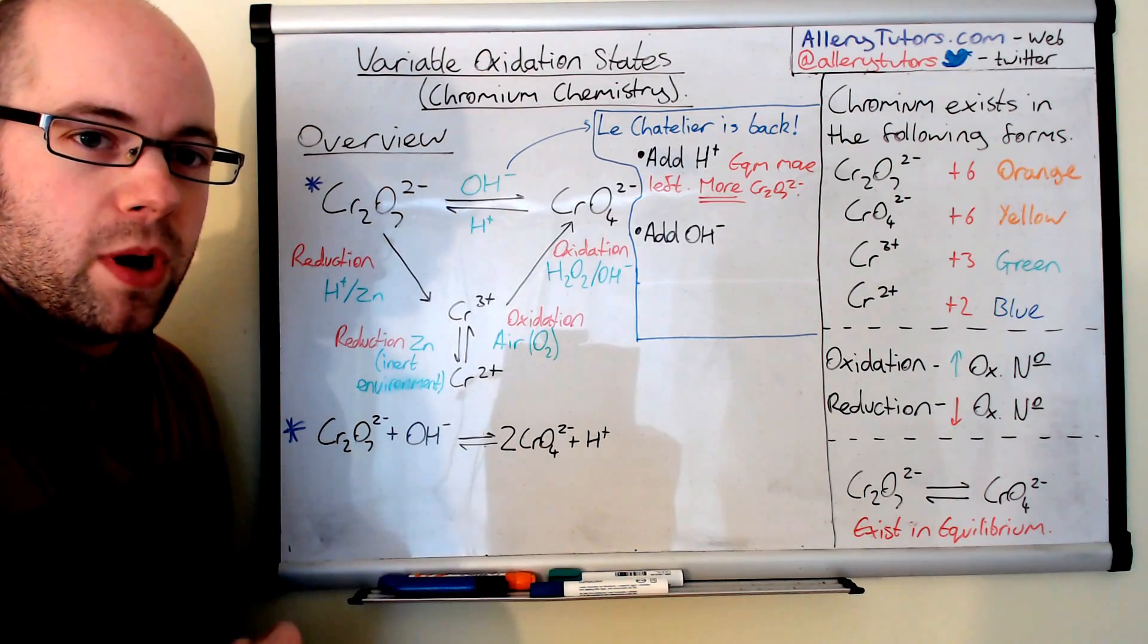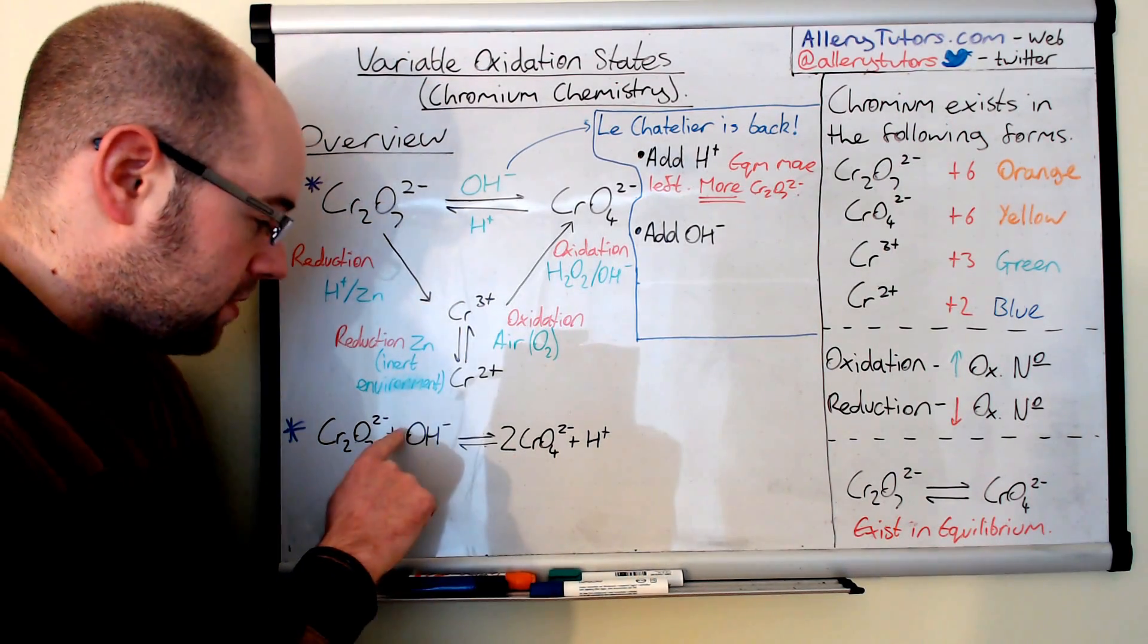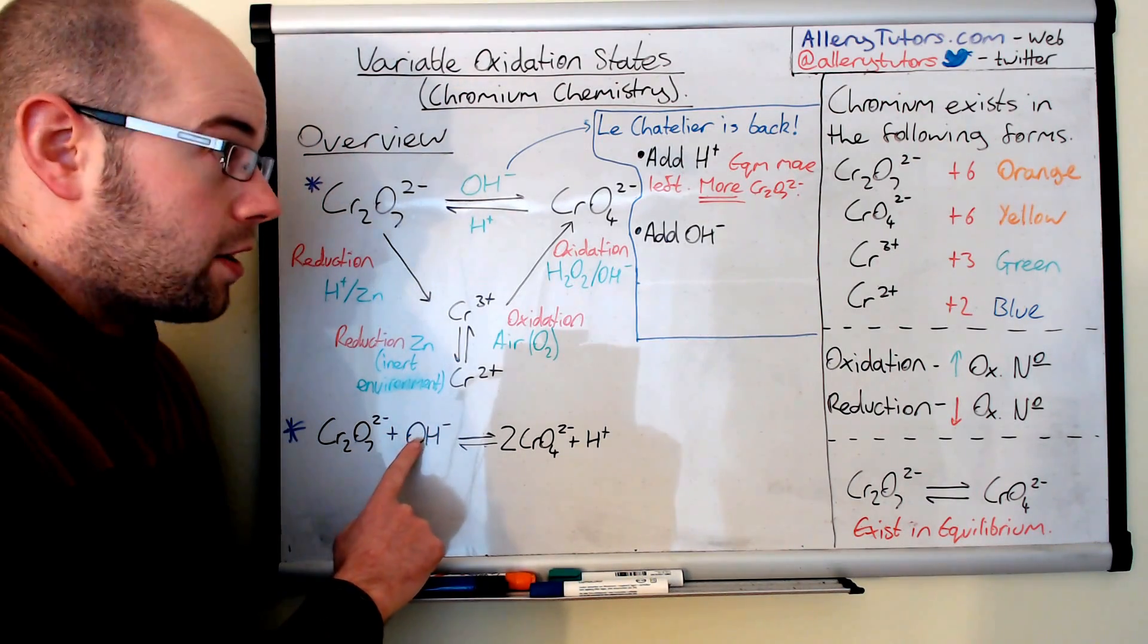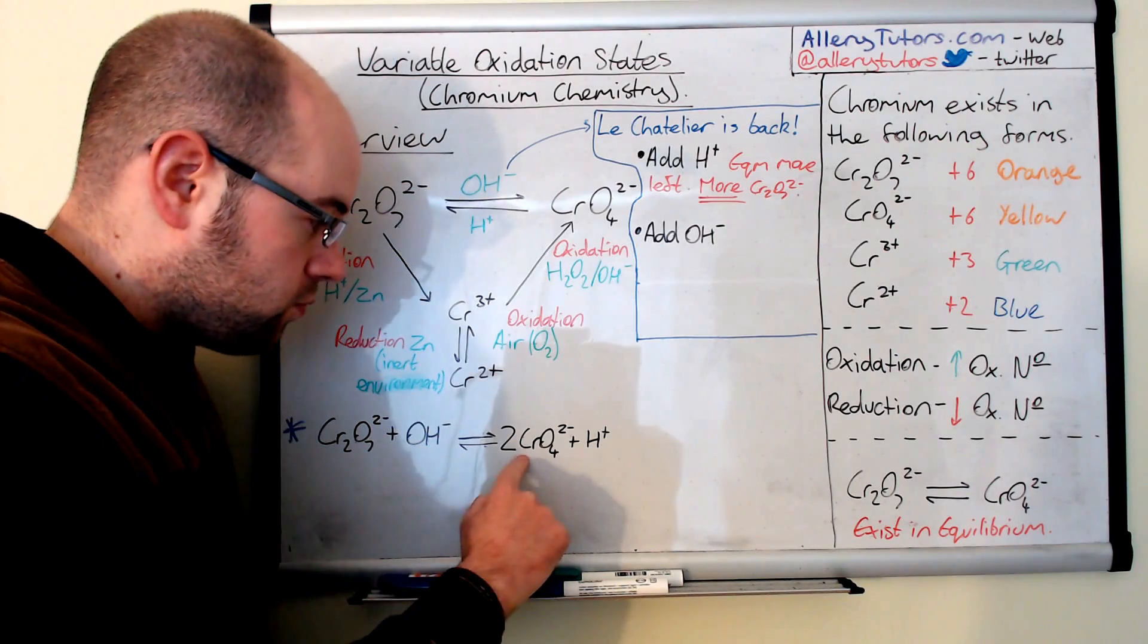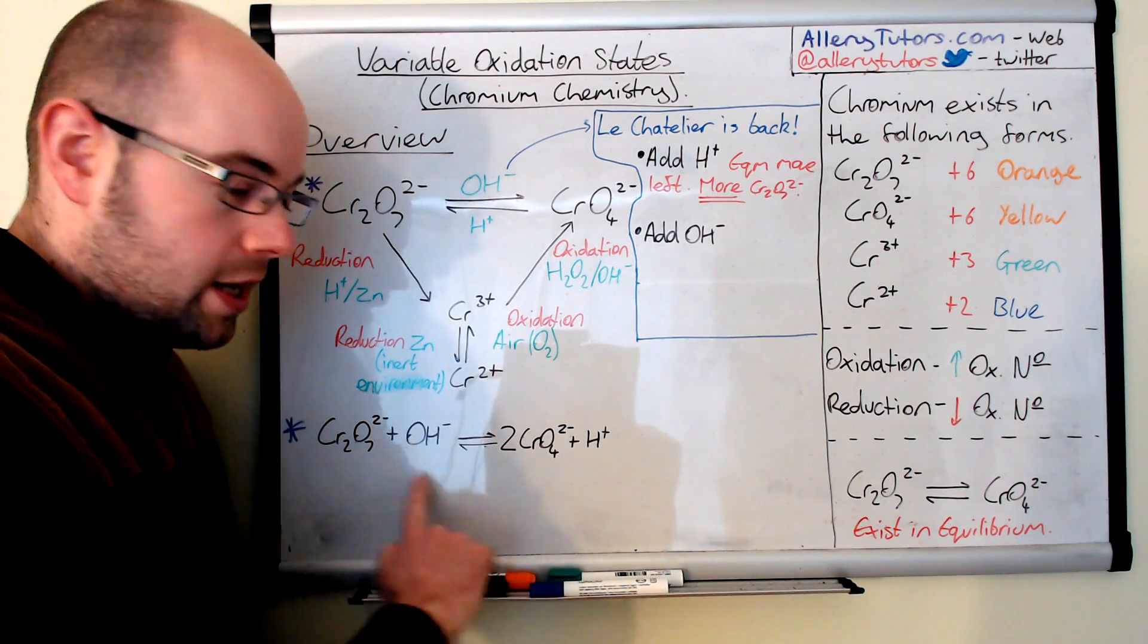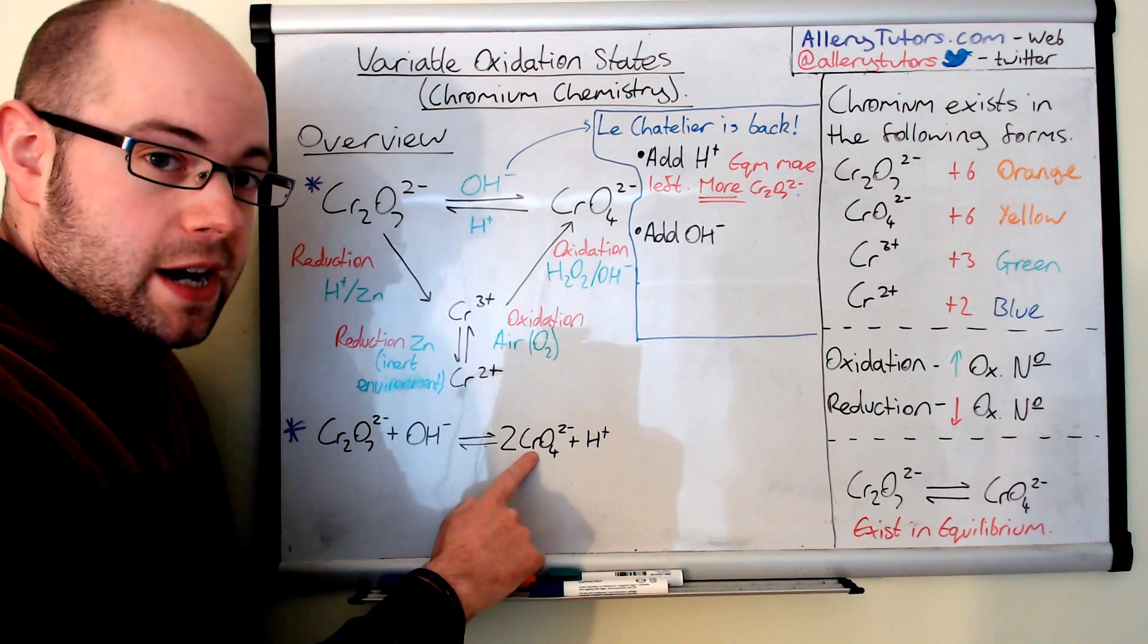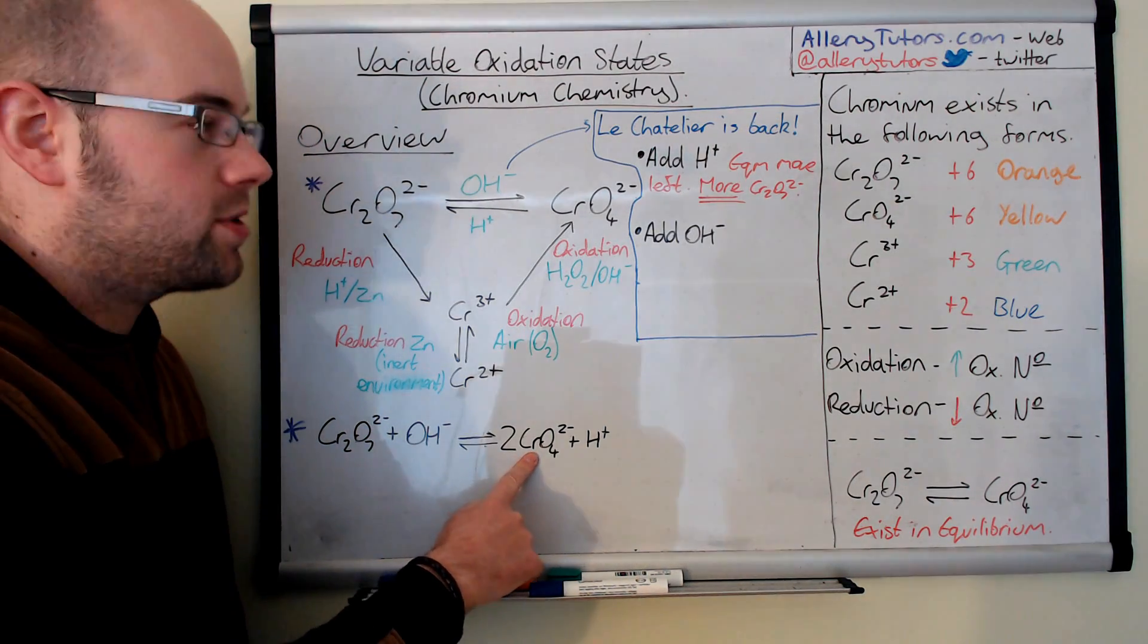If we did the opposite, let's say we added more hydroxide ions to this solution at equilibrium, then effectively what we're doing is we increase the amount of these in our system. According to the Le Chatelier's principle, it will try to oppose the change, so it will shift to the right to use these up, and therefore, we will have more chromate ions, which is yellow.